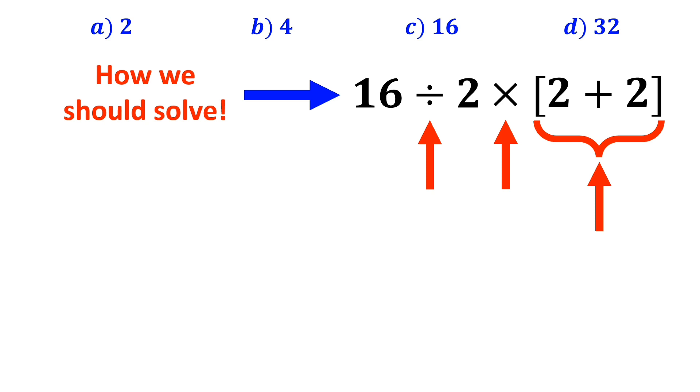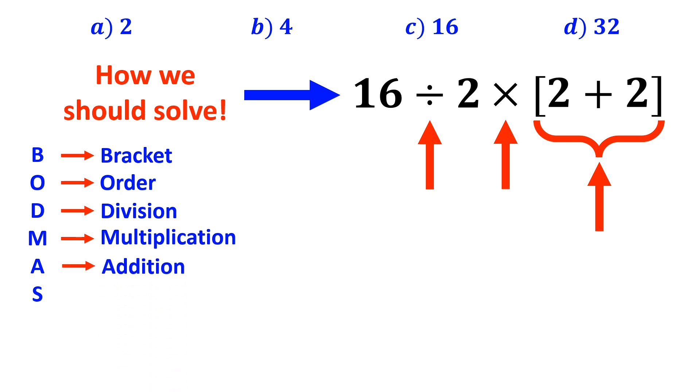To solve this expression, we need to use the BODMAS rule. In this rule, B stands for bracket, O stands for order, D stands for division, M stands for multiplication, A stands for addition, and S stands for subtraction.